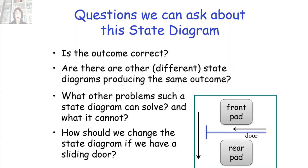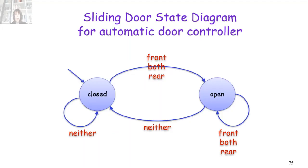I ask you to try to draw the solution for the sliding door state diagram. Please pay attention that we open the door even if someone is only on the rear pad, because with a sliding door it can serve both directions — for entering and for exiting the shop. Thank you.